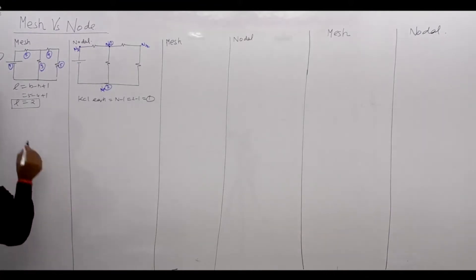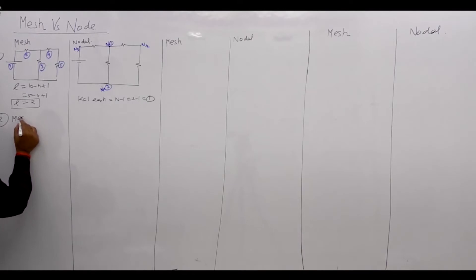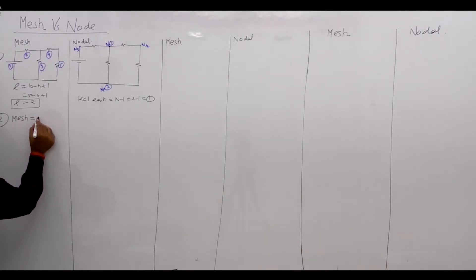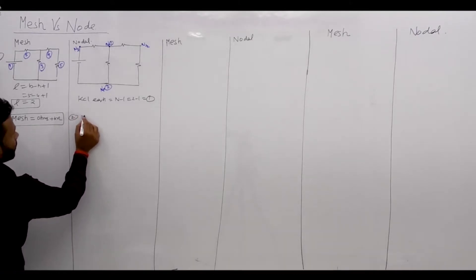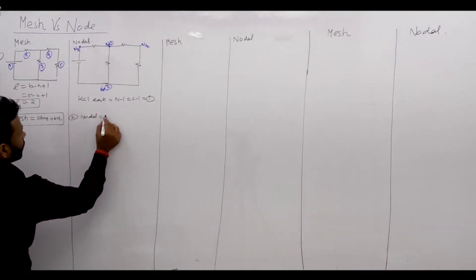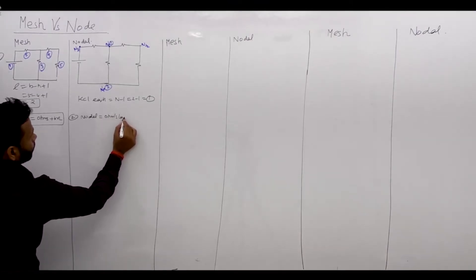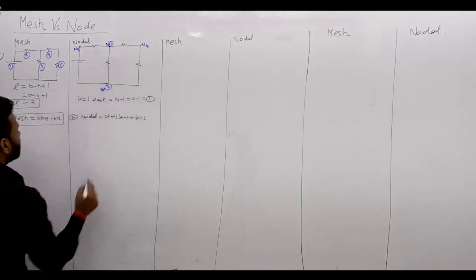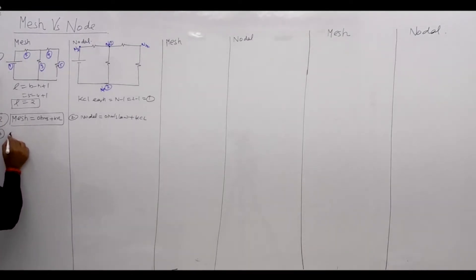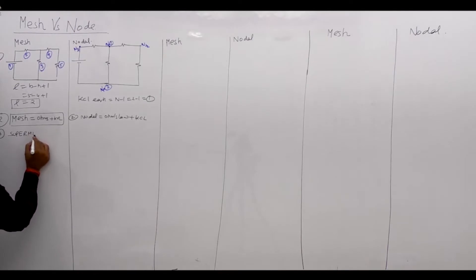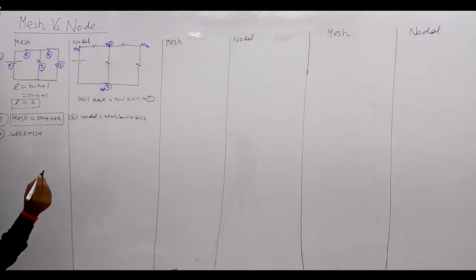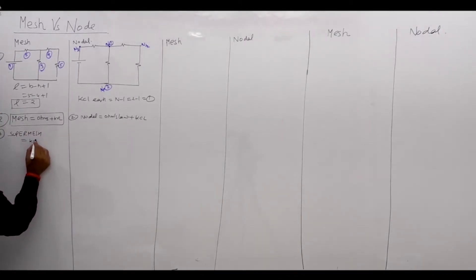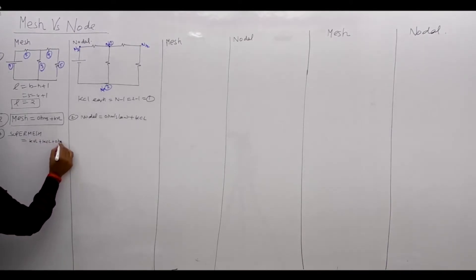For the second point: Mesh analysis uses Ohm's law plus KVL. Similarly, nodal analysis uses Ohm's law plus KCL. And super mesh uses KVL plus KCL plus Ohm's law.